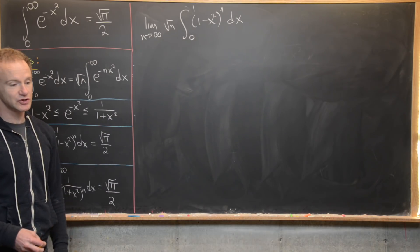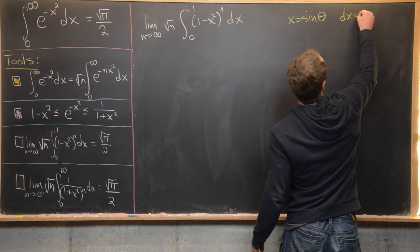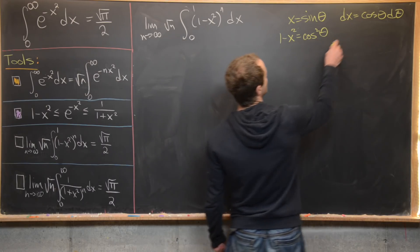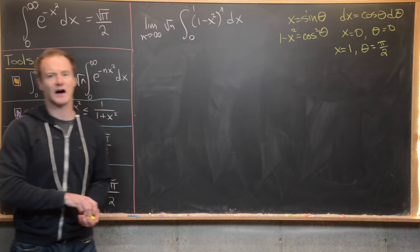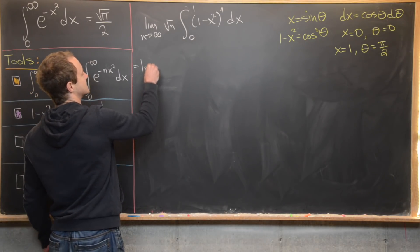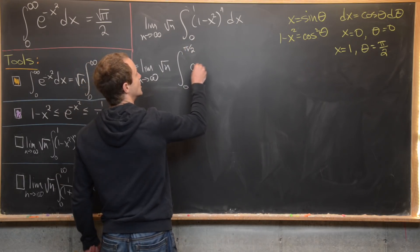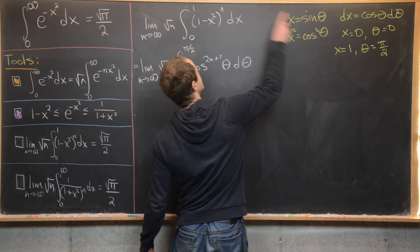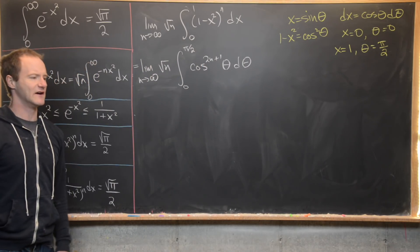To evaluate this integral, we use a trigonometric substitution: let x equal sine theta, making dx equal cosine theta d theta, and 1 minus x squared equals cosine squared by the Pythagorean identity. The bounds transform: when x equals 0, theta equals 0; when x equals 1, theta equals pi over 2. This rewrites the integral as the limit as n goes to infinity of the square root of n times the integral from 0 to pi/2 of cosine to the (2n+1) theta d theta.